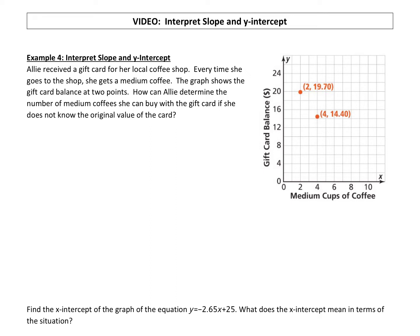So first thing we want to do is make sense of these ordered pairs. Our first ordered pair is (2, 19.70). If we look at our graph, we can see that the x value represents the number of medium cups of coffee. The y value represents the gift card balance. Balance means how much money is left on the card. So our first ordered pair has a 2 for the x, so after two cups of coffee her remaining balance is $19.70. After buying two coffees, her balance on the gift card is $19.70.